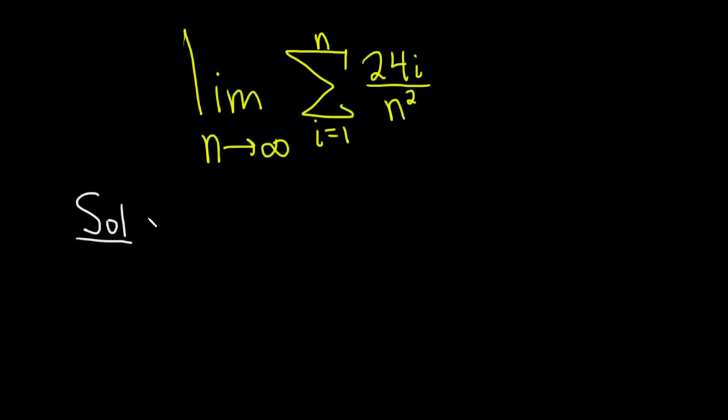So I'm going to start by just writing down the problem one more time. This is the limit as n approaches infinity of the finite sum as i runs from 1 to n of 24i over n squared.